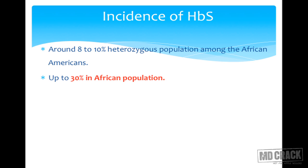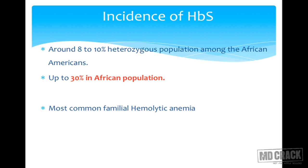Around 8 to 10 percent of cases occur in the general African-American population, making it very common in African-Americans. Around 30 percent incidence is seen in the African population, indicating a very high incidence of sickle cell anemia in that subset. It is one of the most common familial hemolytic anemias especially in the African population.